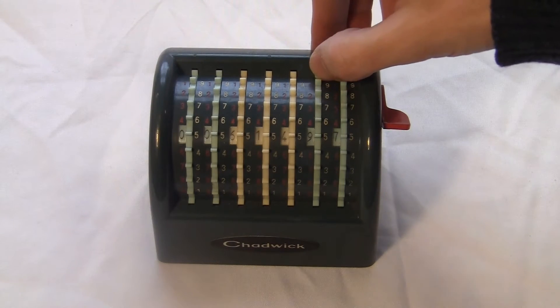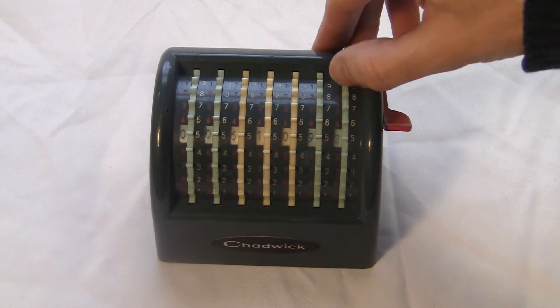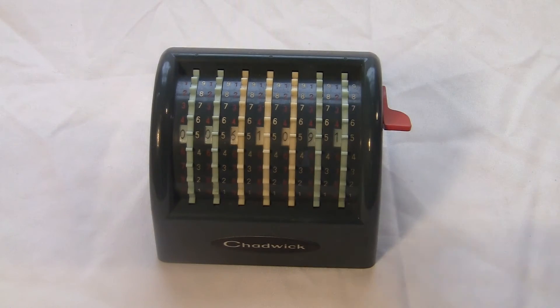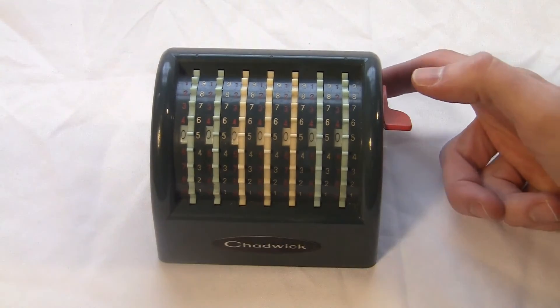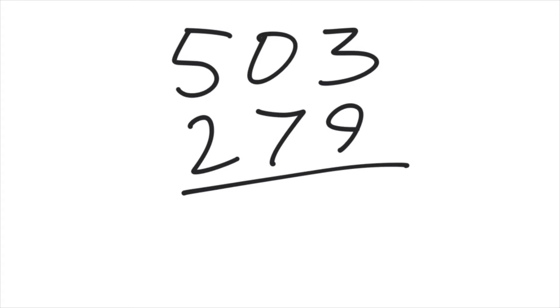The white one plus the red one always equals ten. To subtract, you look at the red numbers and you push it up rather than down. It works perfectly, and you have to think a lot less than a machine that uses nines complements. Here's 503 minus 279.